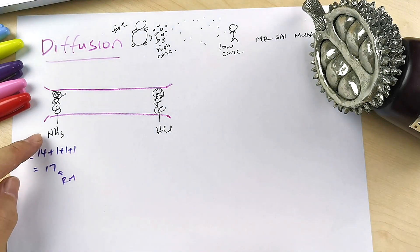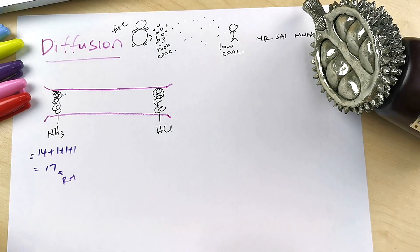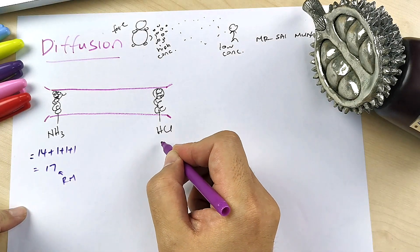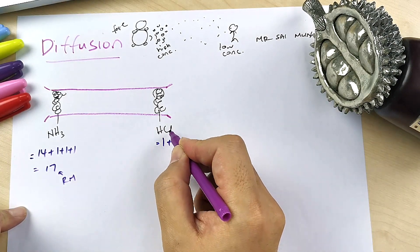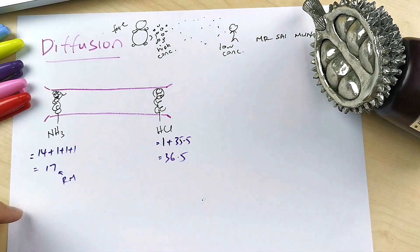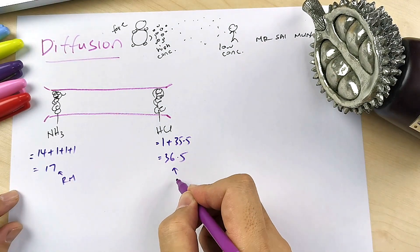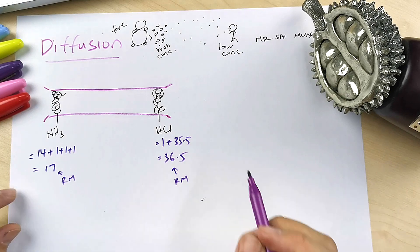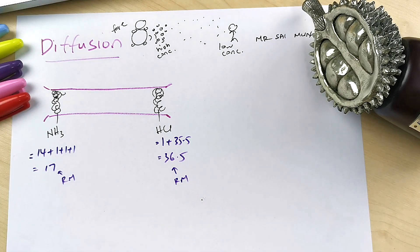Compared with HCl, you check the periodic table. Hydrogen is 1, and chlorine is 35.5, so it's 36.5. So the relative mass of this is 36.5.